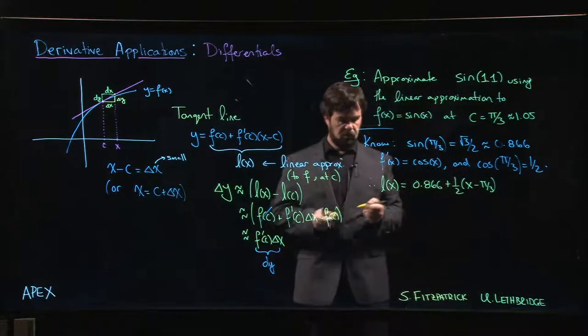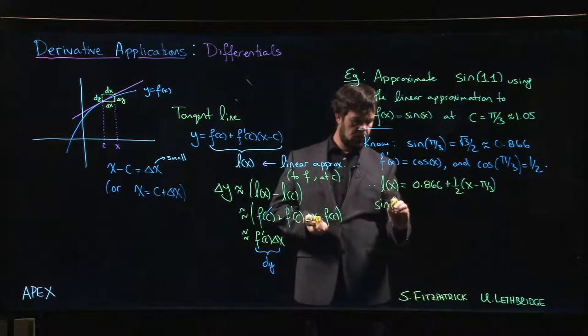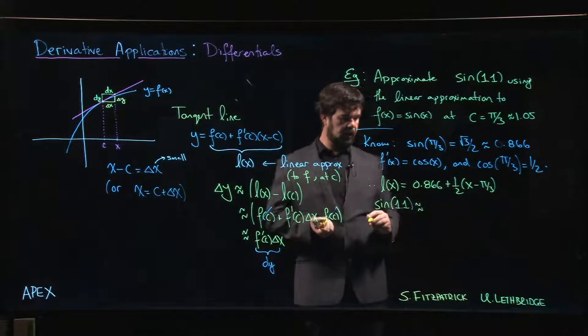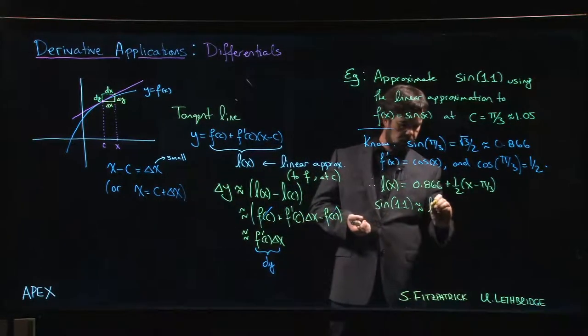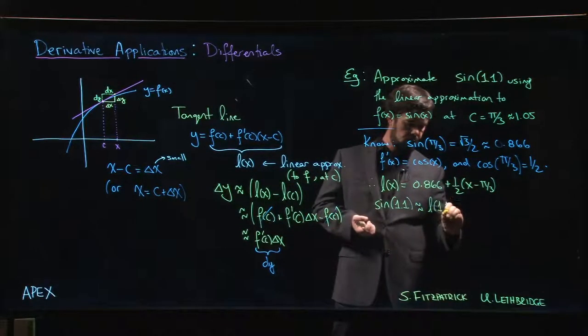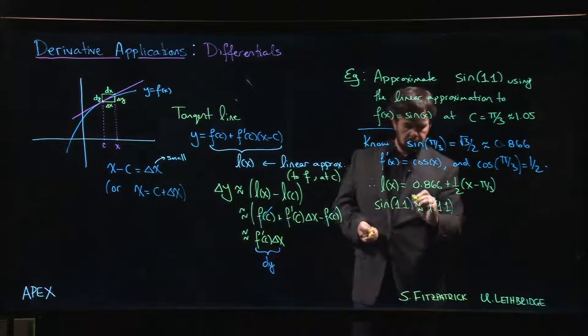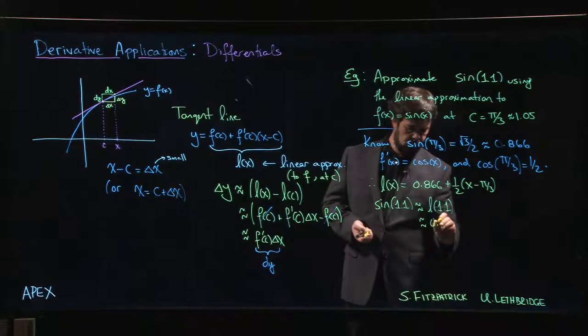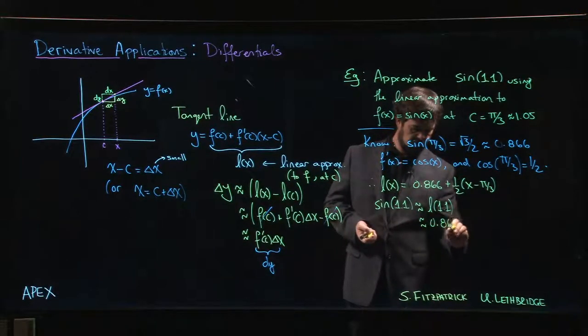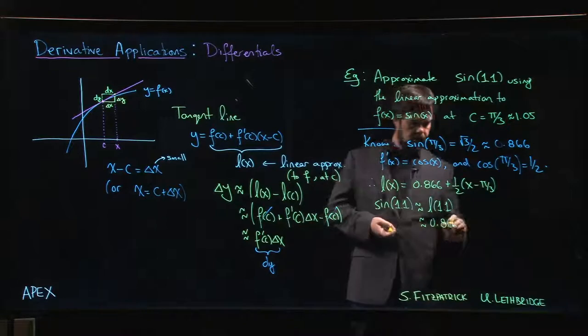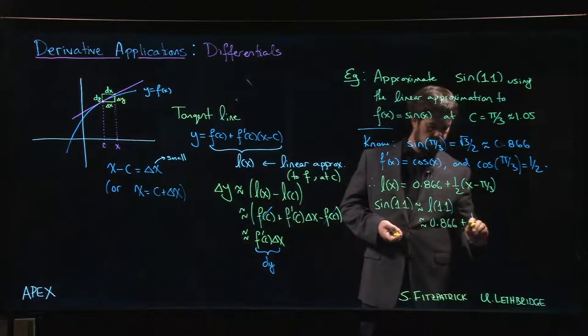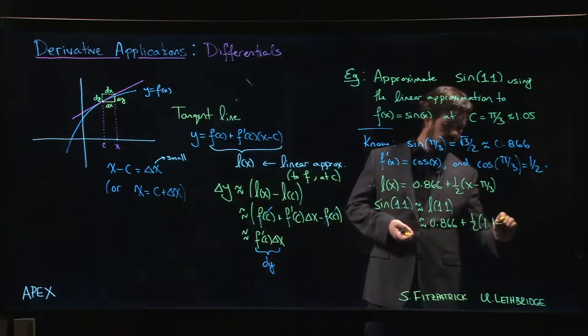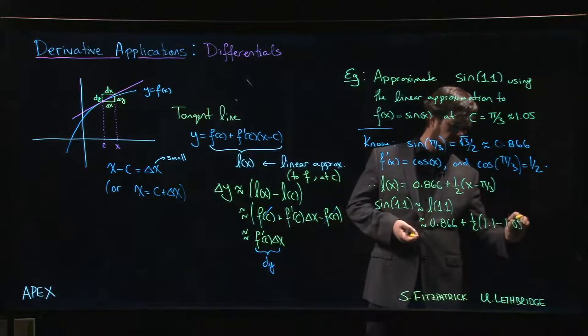So we do this. We say sine of 1.1 is approximately L at 1.1, and L at 1.1 is 0.866 plus one-half of 1.1 minus 1.05.